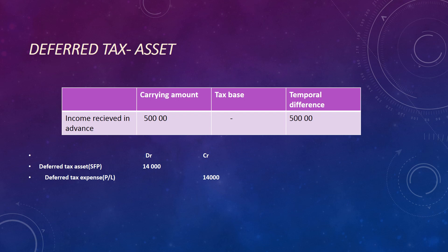Our carrying amount for income received in advance is $50,000, and the tax base is nil. So our temporary difference is $50,000. You might be asking yourself why we have a tax base of nil here. The reason is that the tax base is equal to the carrying amount less the amount of revenue that will not be taxed in the future. So $50,000 minus $50,000 gives us zero. That means our carrying amount of the liability is greater than the tax base.